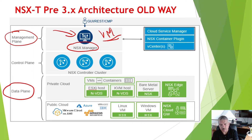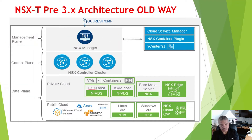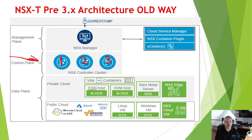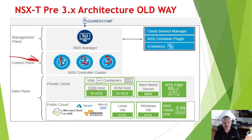In the control plane, you'll see there are three VMs. The control plane provides one of the things it does — it maintains a set of tables: VTEP, MAC, and ARP tables (I'll talk about that in a separate video). It also keeps track of where my VM is running. Whenever I make a change in the management plane, that change is propagated down to the control plane, and then propagated down into the data plane.